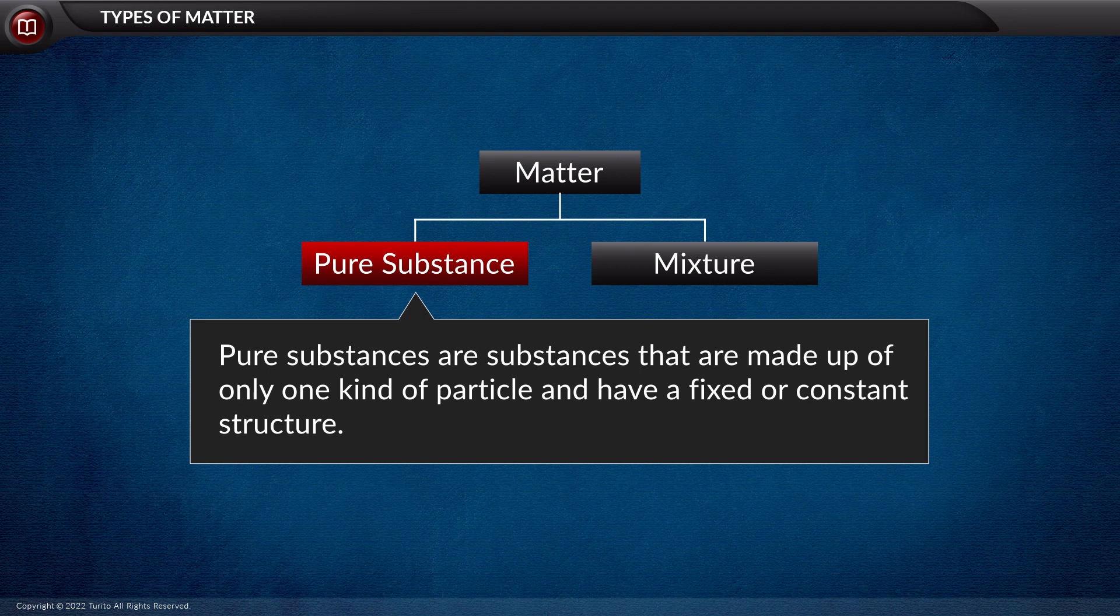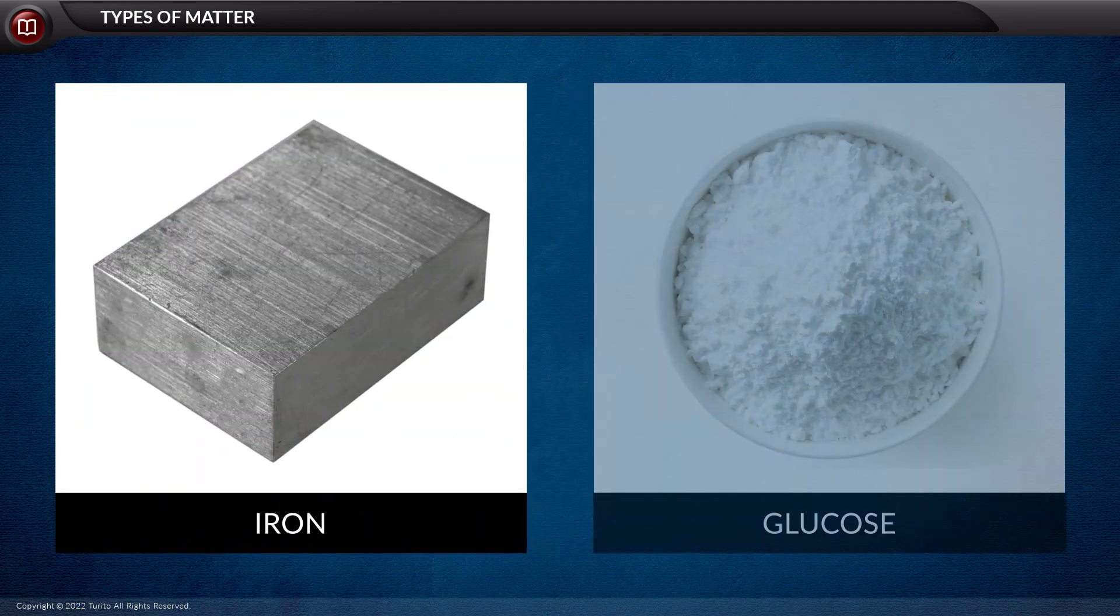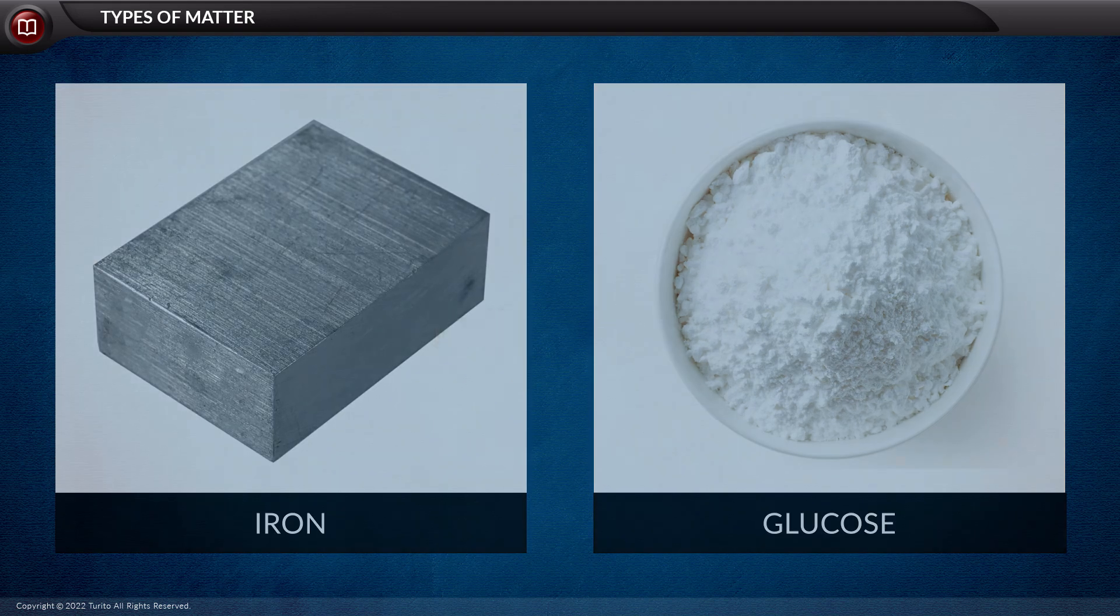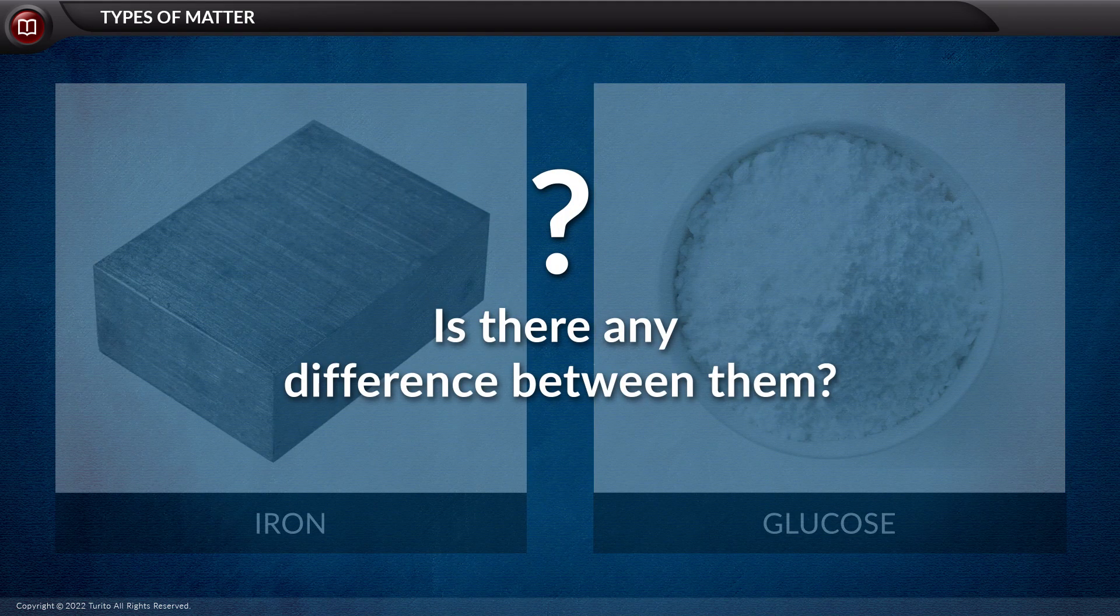Let us take a few examples which we see around us to understand pure substances. Say you have an iron block and glucose. Both are pure substances, but is there any difference between them?